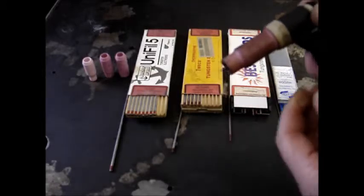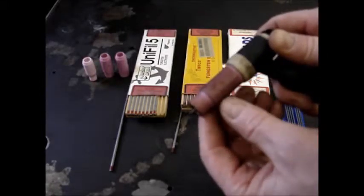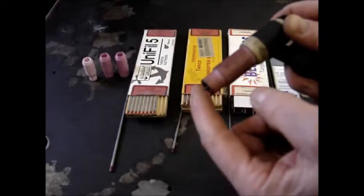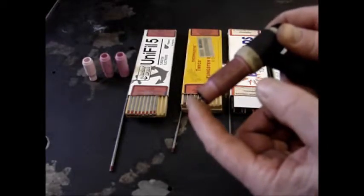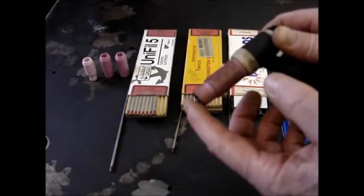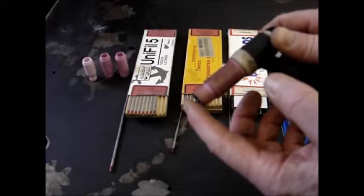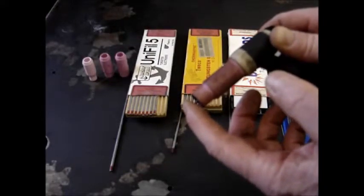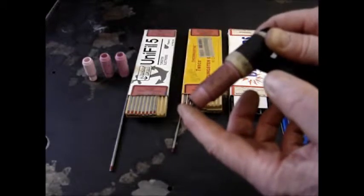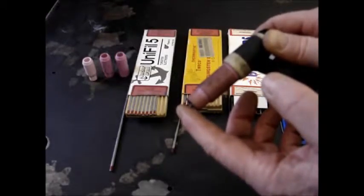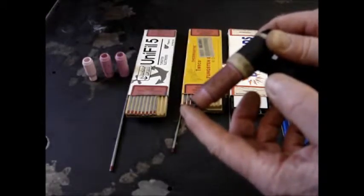And this tungsten inert gas welding, this is the tungsten, and the inert gas would normally be something like argon, 100% argon, which is what I use on all of my welding, whether it be aluminum, stainless steel, or steel, it's the most versatile. 100% argon is the most versatile.